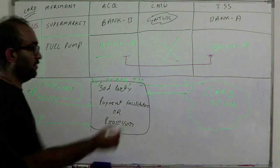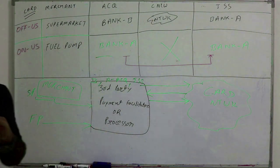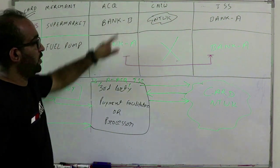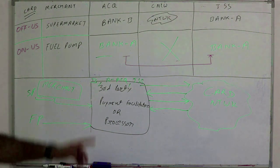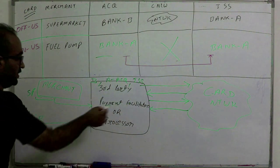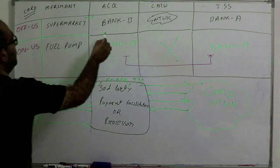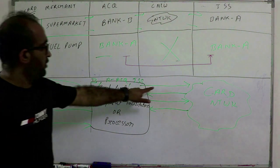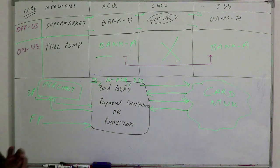When they receive it back from the card network they say: this transaction belongs to Bank A. They approve the transaction and send the response back to the card network, since that's where the request came from. Card network then sends the response back to the acquirer - which is the same processor - and they finally send the response back to the merchant. So how many steps are there? One, two, three - then four, five, six. Total six steps in the case of OFF-US. I hope this is clear - if not, you can watch the video again.